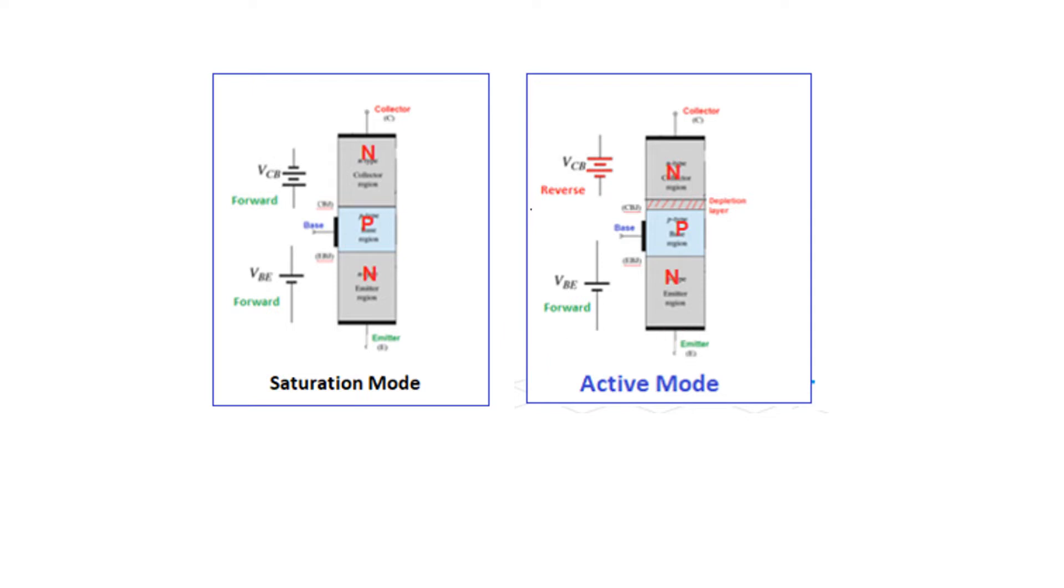What we can conclude from here is that if we only know the base emitter voltage to be forward bias, then we cannot say whether the transistor is in saturation mode or in active mode unless we know the base collector voltage.